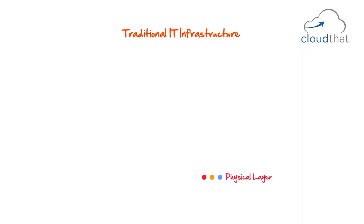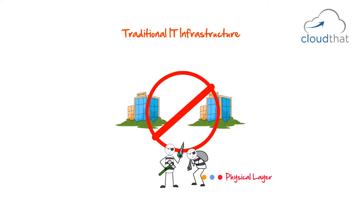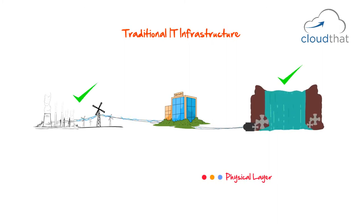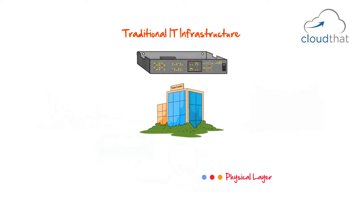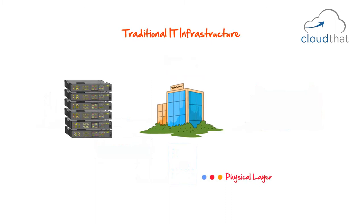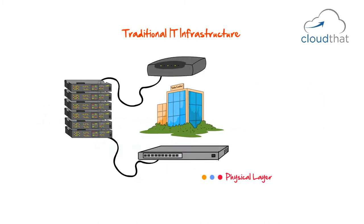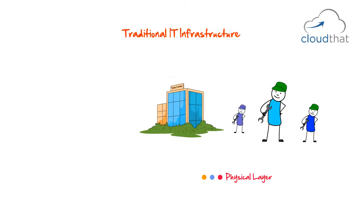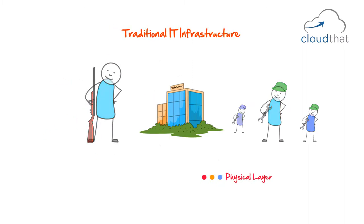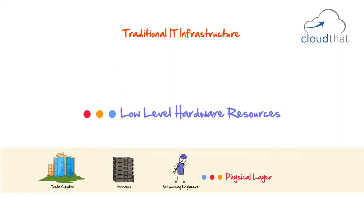The first and bottom-most layer is the physical layer. This involves figuring out where to put your data center — it has to be in a good place, not in a flood zone or earthquake zone. The data center should be secure, with a good power supply possibly from two grids, a backup generator, a diesel storage tank, and cooling equipment. Once the data center is set up, you buy and install servers, connect them with cables, routers, and switches, deploy software, and arrange for staff, network engineers, and security personnel.